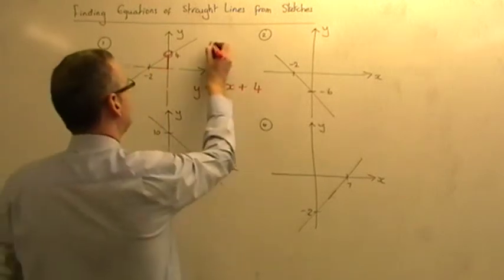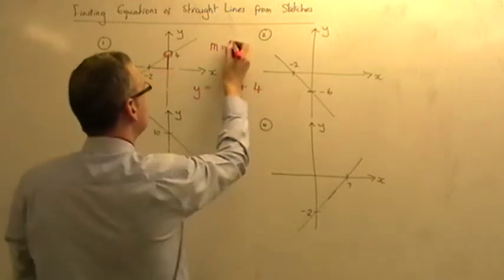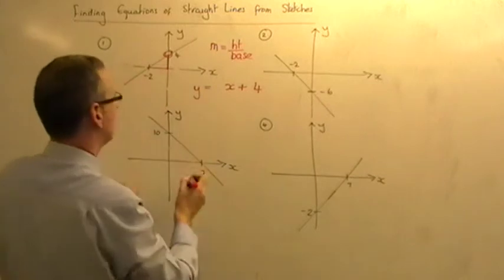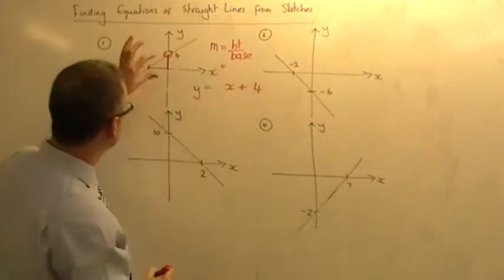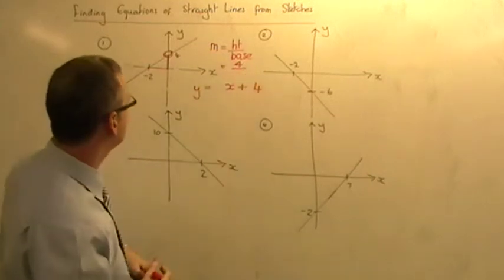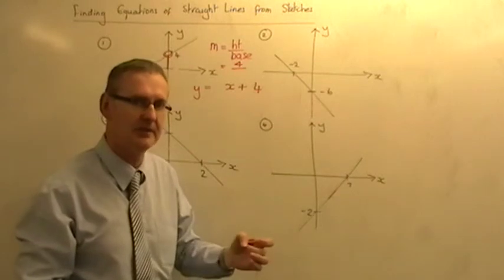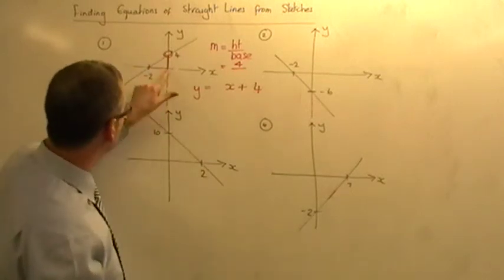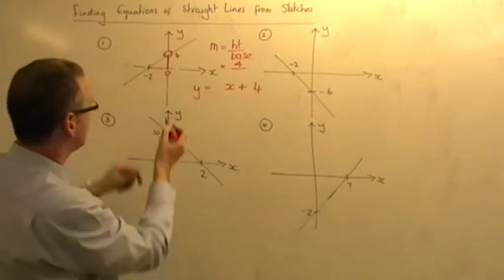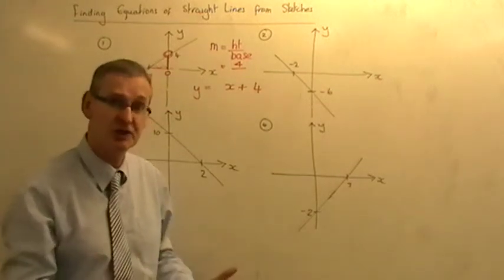So the slope, which we call the letter m in this work, the slope is going to be the height divided by the base for this particular triangle. So the height of that triangle goes from 0 to 4, which is 4, and you divide it by the base. Now be careful, you do not make use of the negative numbers in this calculation. All you say is it goes from 0 on the x-axis down to minus 2. Well, that is simply two steps. So the distance for the base is just two.